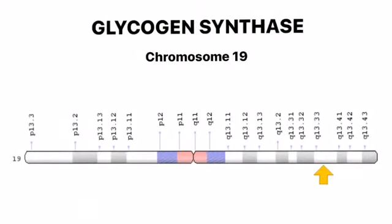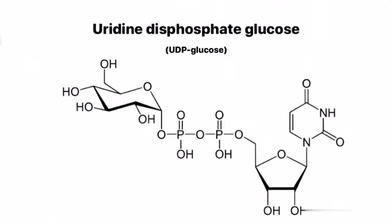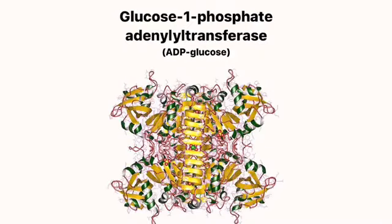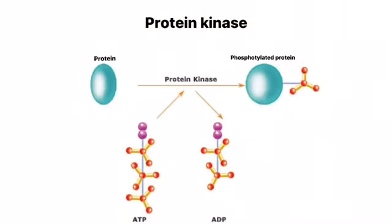Glycogen synthase can be classified into two general protein families. The first one, from mammals and yeast, uses UDP glucose as a sugar donor. The second one, from bacteria and plants, uses ADP glucose as a sugar donor.